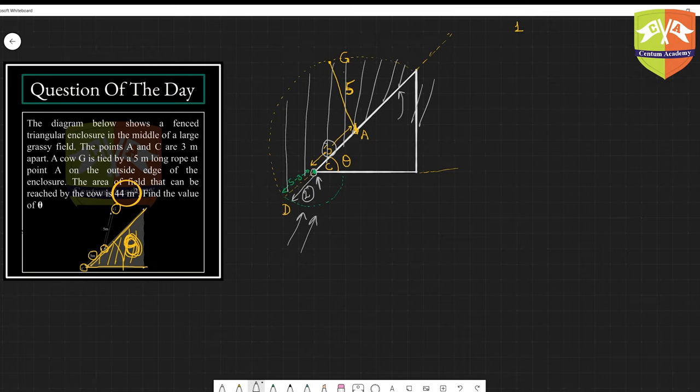It will be sweeping this area with two meters. It will not be able to go beyond that because the enclosure AC will obstruct its movement. I hope this is clear.